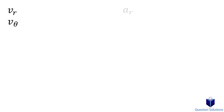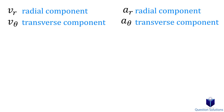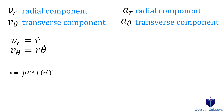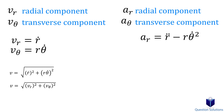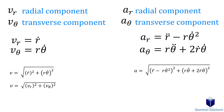Velocity and acceleration can each be broken into two parts: the radial component and the transverse component. For velocity, the radial component and transverse component each have their own equation, and the magnitude of velocity can be found using a combined equation. For acceleration, we also have three equations: one for the radial component, one for the transverse component, and one for the magnitude of acceleration.